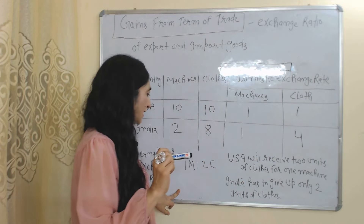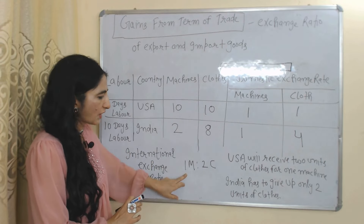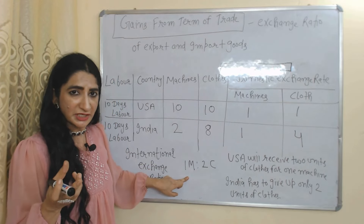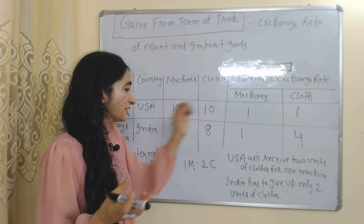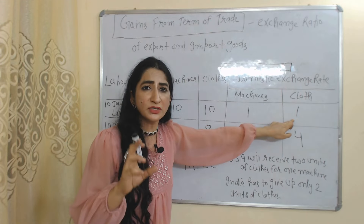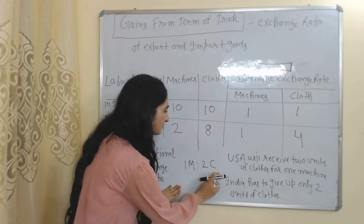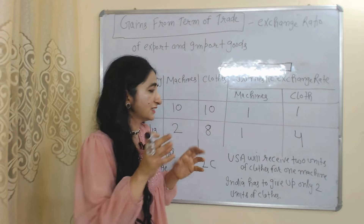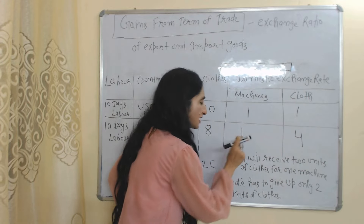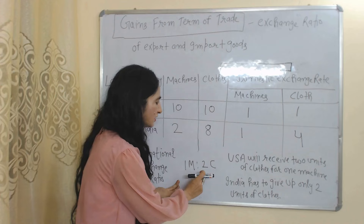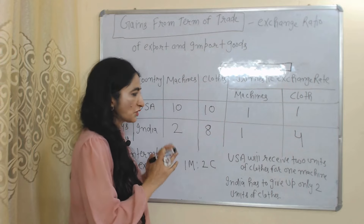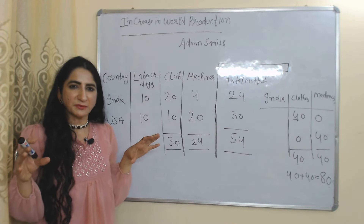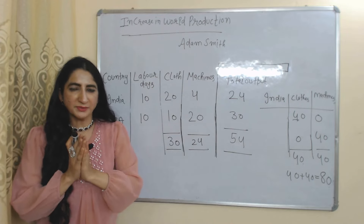Now suppose the international exchange rate is 1:2 — that means at the international market, countries can receive 2 units of cloth in exchange for 1 machine. With this ratio, both countries will be benefited. At the domestic market, USA can receive only 1 unit of cloth per machine, but at the international market USA is receiving 2 units. Similarly, India has to give up 4 units of cloth per machine domestically, but at the international market India gives up only 2 units. So both countries are benefited — this is called gain from terms of trade.